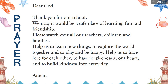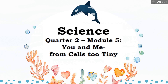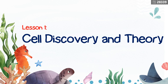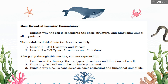This is Science 7, Quarter 2, Module 5, entitled 'You and Me from Cells 2, Tiny.' Today we are going to discuss all about cell discovery and theory. The module is divided into two lessons: Lesson 1 is cell discovery and theory, and Lesson 2, for tomorrow, is cell types, structures, and functions.